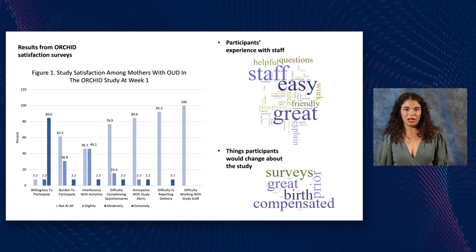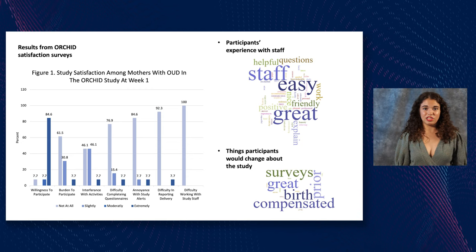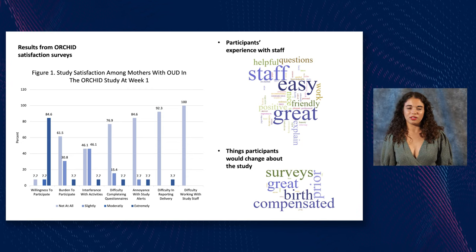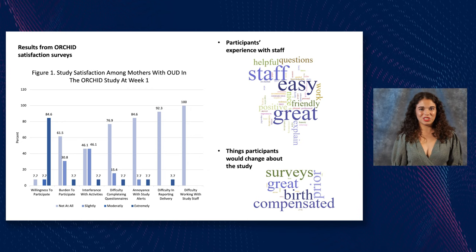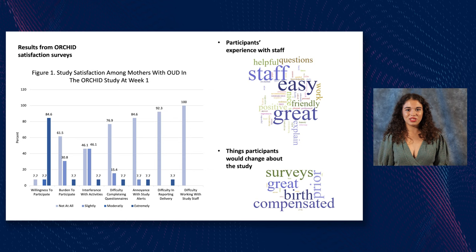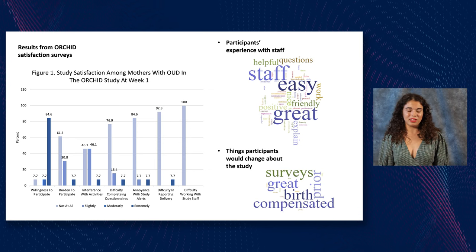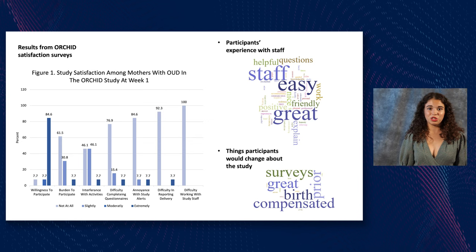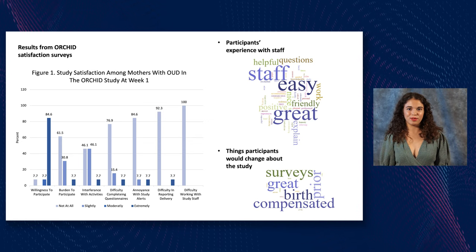To conduct our research, we analyzed data from previous satisfaction surveys from week one of a different study, using the computer software REDCap to maintain confidentiality. We found that participants most value compensation and relationships with compassionate research staff. Items like burden to participate, annoyance with results, and difficulty completing questionnaires all correlate with the overall experience with study staff, so having a compassionate, flexible staff is extremely central to overall participant satisfaction.